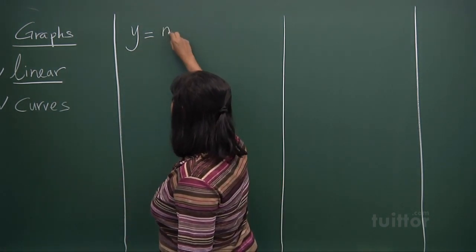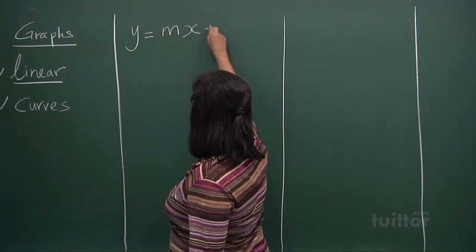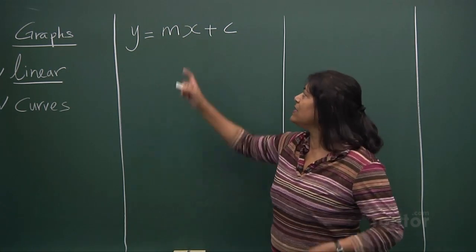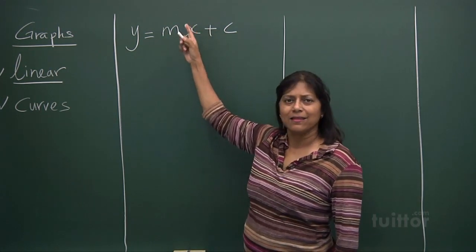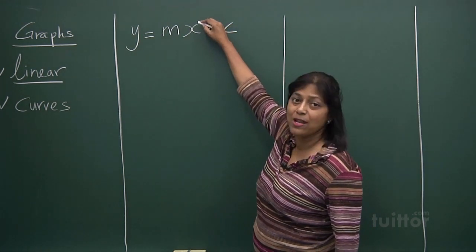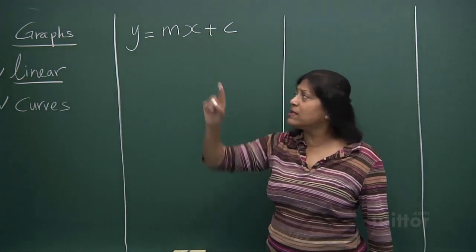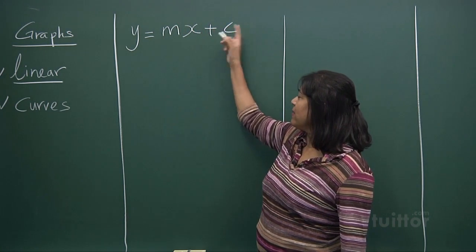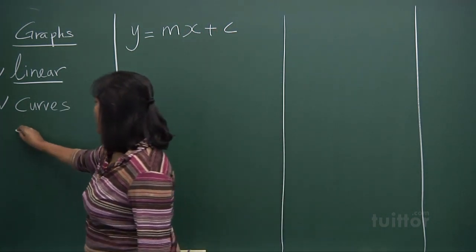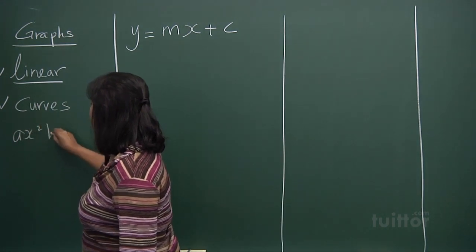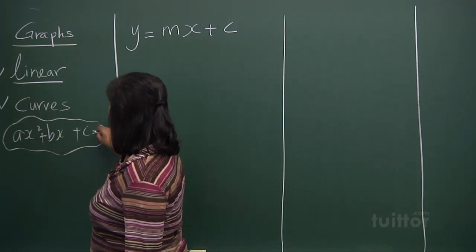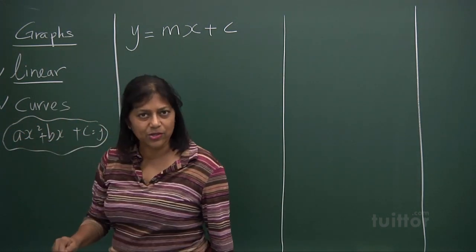A linear graph takes this form: y = mx + c. Do you see the order of x? It's 1. When I say order, the power here is 1, not 2. Once it's 2, if it appears in the form ax² + bx + c, you call this a quadratic equation.